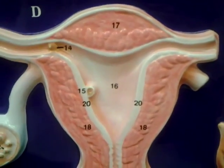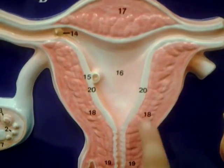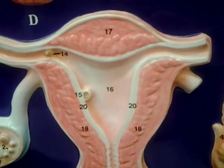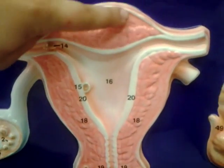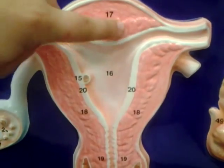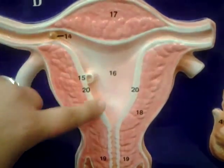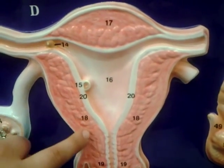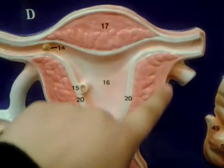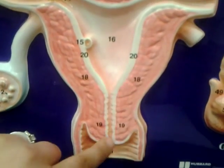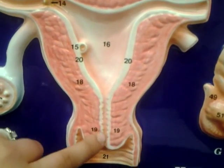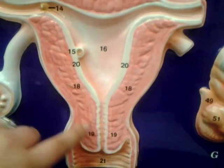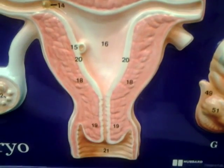Implantation usually happens around day seven, and it would be here. The uterus shown — you can see the fundus here, the body here, the endometrium around the edge, the myometrium here deeper, the cervix is number 19 here, and the vagina at 21.